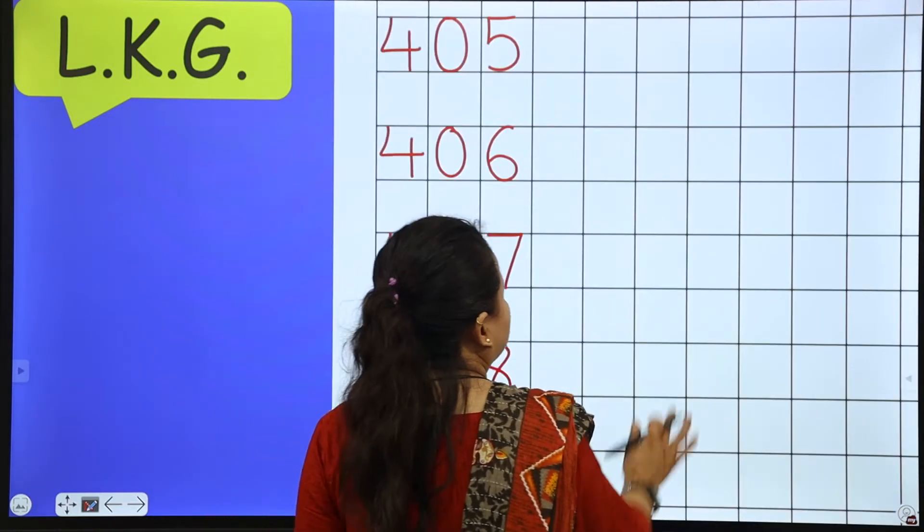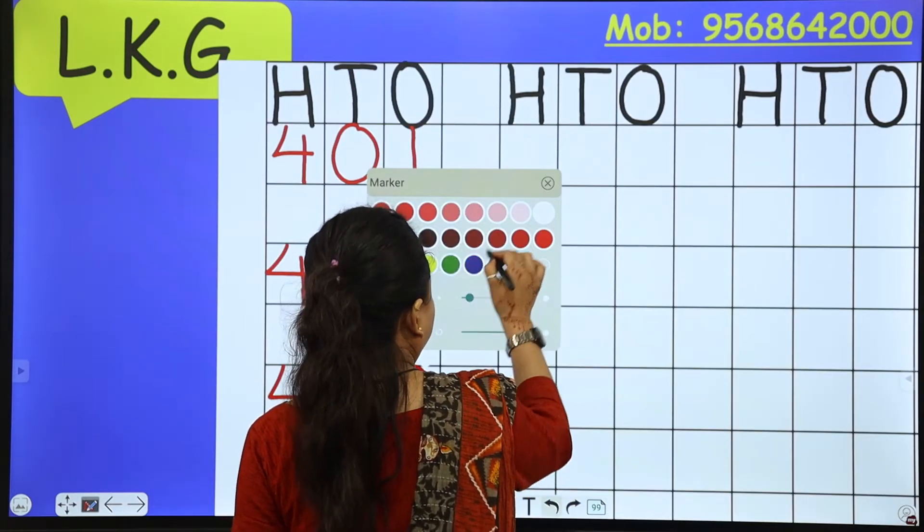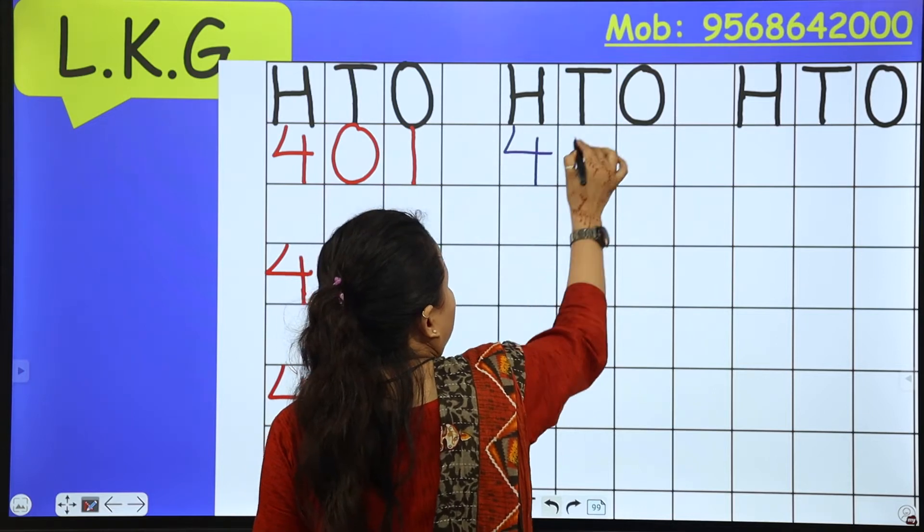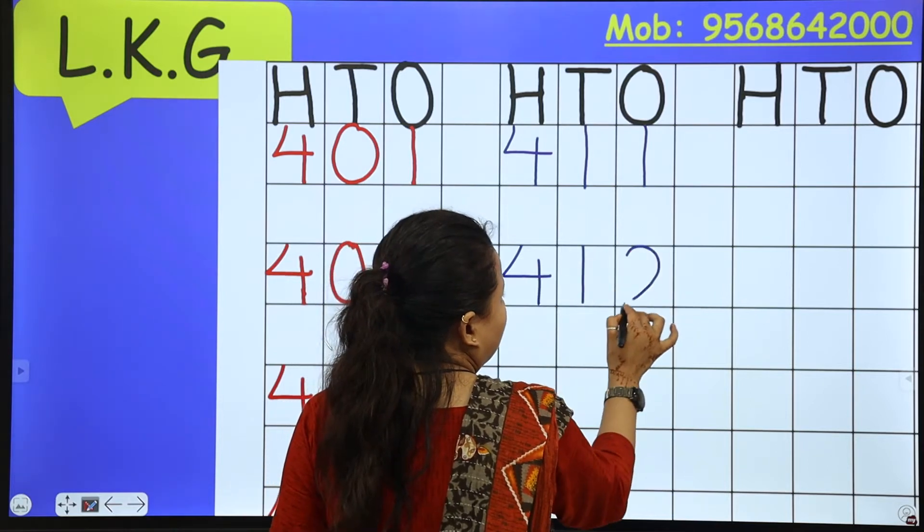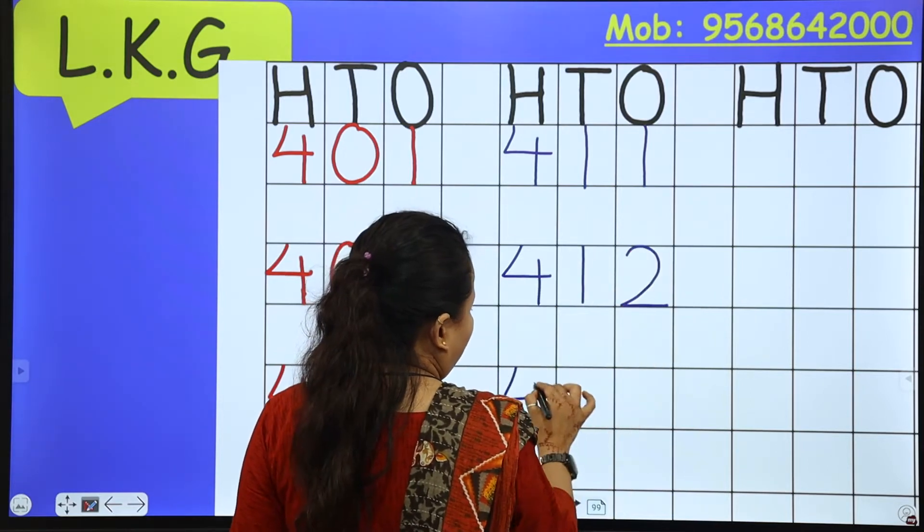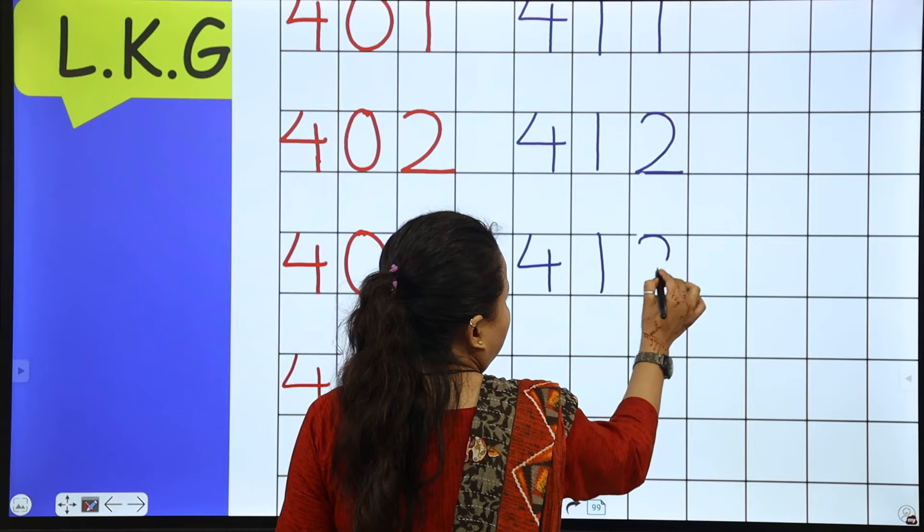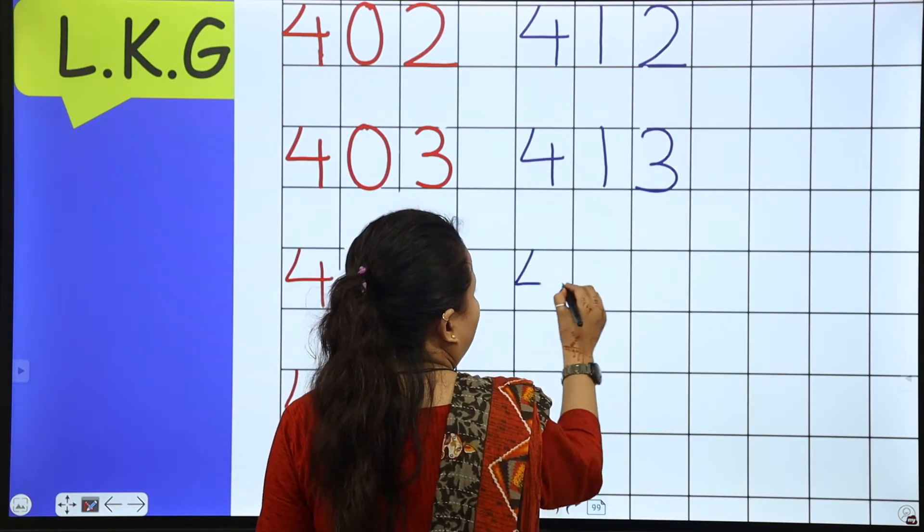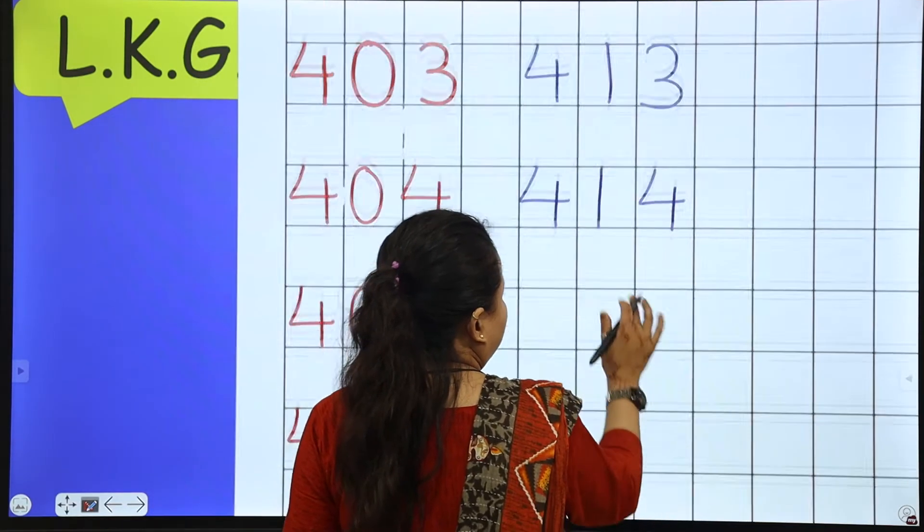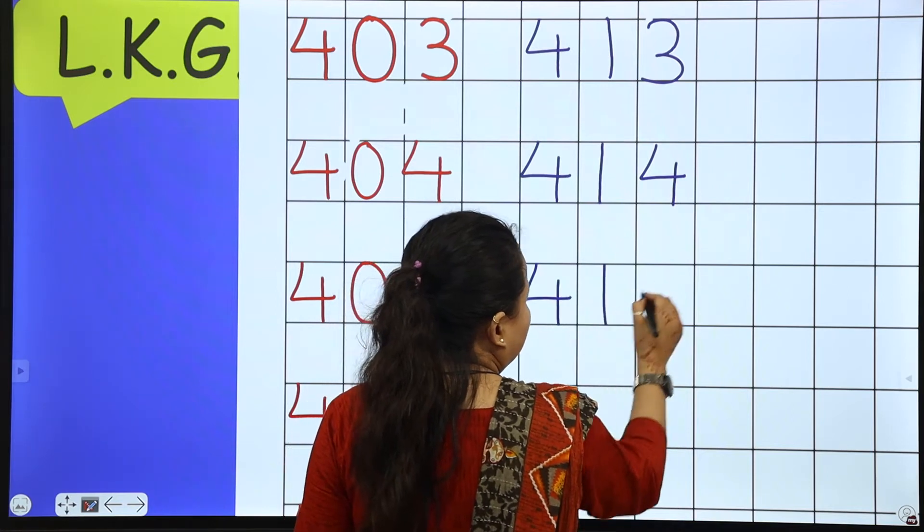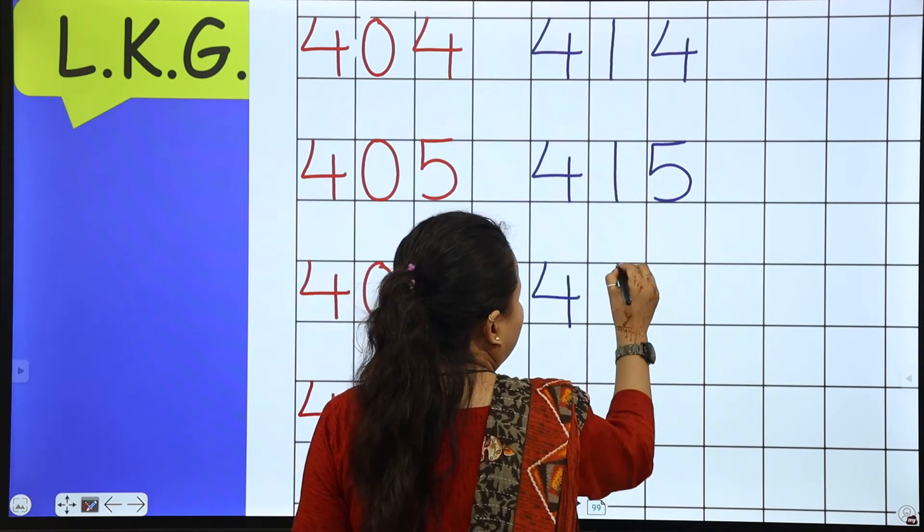So next line start with 411. So 411, 412, 413, 414. Next is 415.